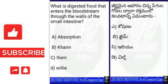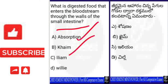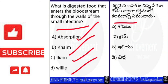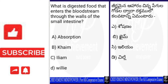Next question: what is the process by which digested food enters the bloodstream through the wall of the small intestine? Let's check out the options: A. Absorption, B. Digestion, C. Elimination, D. Villus. You can tell me the answer in the comment section. For this question the right answer is A — Absorption. Absorption (Shoshanam) is the right answer.